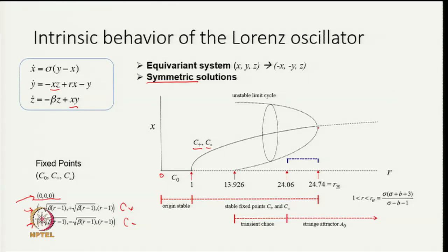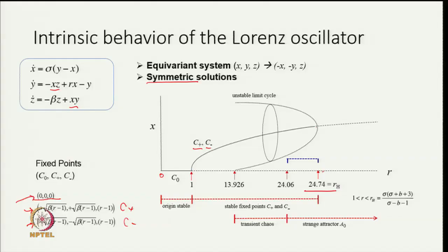These two fixed points are stable up to a certain point where a bifurcation happens. This is a Hopf bifurcation which we have not discussed in this course so far, but it may be discussed in forthcoming lectures or perhaps in the next course. After this Hopf bifurcation these fixed points also become unstable. Lorenz studied the system for the value of r = 28 which is somewhere here when neither the fixed point at 0 is stable nor are the fixed points C+ and C- stable.